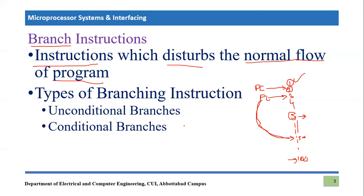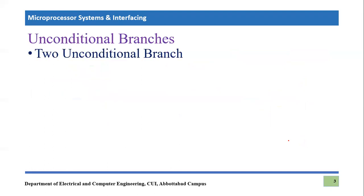There are two types of branch instructions: unconditional branching and conditional branching. In this lecture we will focus only on unconditional branches; conditional branches will be covered later. Unconditional branches — whenever they occur in the code, you must jump, regardless. For example, if line four is an unconditional branch forcing a jump to line 55, that jump will happen with no compromise. But if line four is a conditional branch, a specific condition is checked, and branching only happens if that condition is true; otherwise, sequential flow continues.